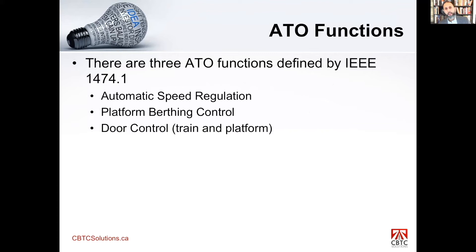There are three functions defined by ATO as specified in IEEE 1474.1: the ASR (Automatic Speed Regulation), platform berthing — which controls a train coming into a station, opening and closing doors, and departing — and door control itself for both train and platform doors. All of these are considered non-vital functions under IEEE.